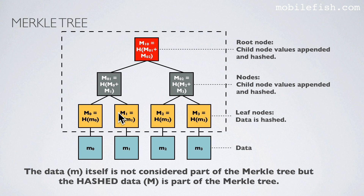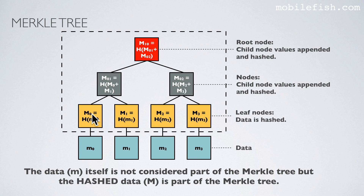This is a Merkle tree. We start at the bottom with the data: M0, M1, M2, and M3. Data can be a file or a private key. If we take this value with a lowercase m and hash it, we get a hashed value indicated by the capital letter M. We do this for all the data. These nodes are called leaf nodes, where the data is hashed.